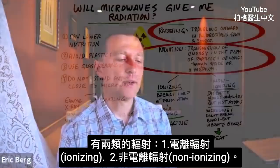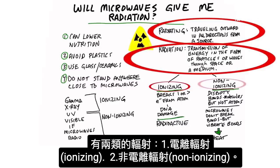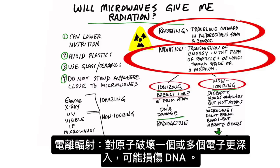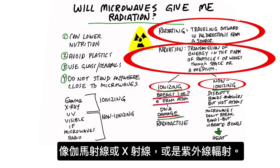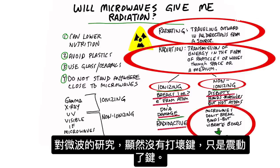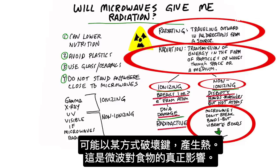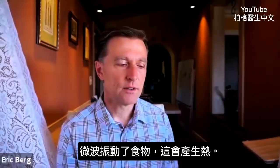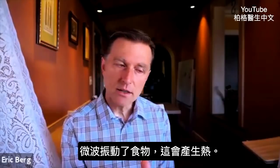There are actually two types of radiation: ionizing radiation and non-ionizing radiation. Ionizing radiation breaks one or more electrons from the atom — it's deeper, it can create DNA damage, and that would be like gamma rays, X-rays, or even to some degree UV radiation. Non-ionizing radiation can disrupt bonds of molecules but not necessarily the atoms. In the research on microwaves, it apparently doesn't even break the bonds — it just vibrates them, creating heat. That's really how microwaves affect food: they vibrate the food, which creates heat.